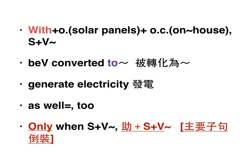With solar panels on the roof of the house，太陽能板在房子的屋頂上，太陽光就可以be converted to electricity，被轉換為電能，就是太陽能板發電。With small wind turbines on our balconies, we can use the power of the wind to generate electricity as well。